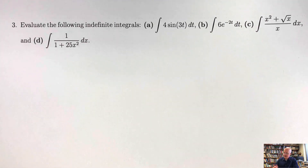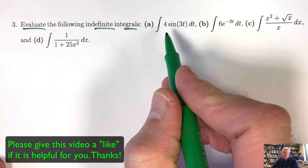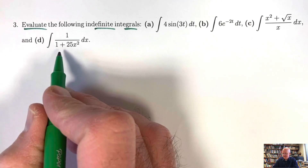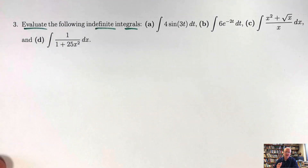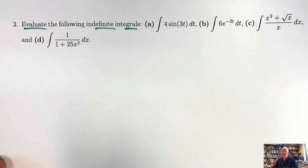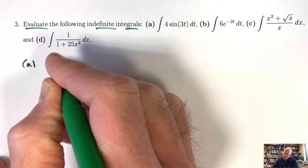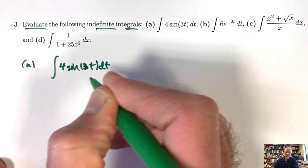Problem 3: evaluate some indefinite integrals using the memorized rules, but with some twists — constants in front, fractions involving square roots, and a modified arctangent form. There's an official method called substitution (u-substitution), but for this video we'll focus on educated guessing. Part A: integrate 4·sin(3t) dt.